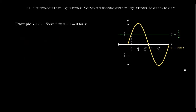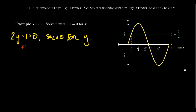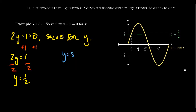What I'm going to do is slightly modify this equation. If we had something like 2y minus 1 equals 0 and solved for y, we'd add 1 to both sides to get 2y equals 1, then divide both sides by 2 to get y equals 1/2. The little trick here is just the substitution y equals sine of x.